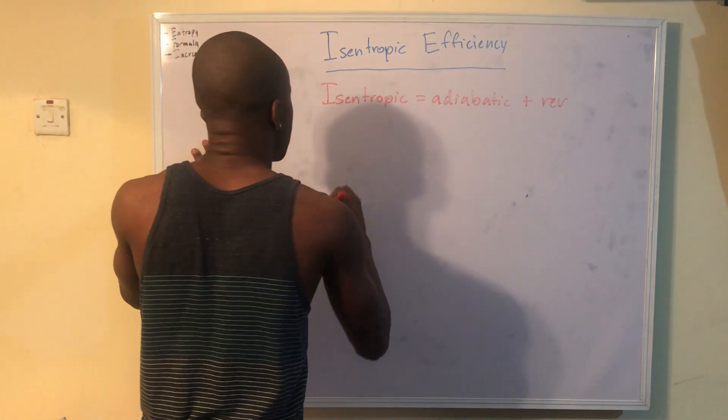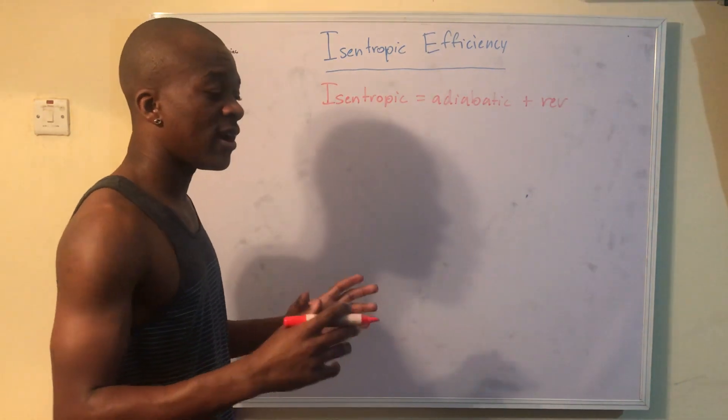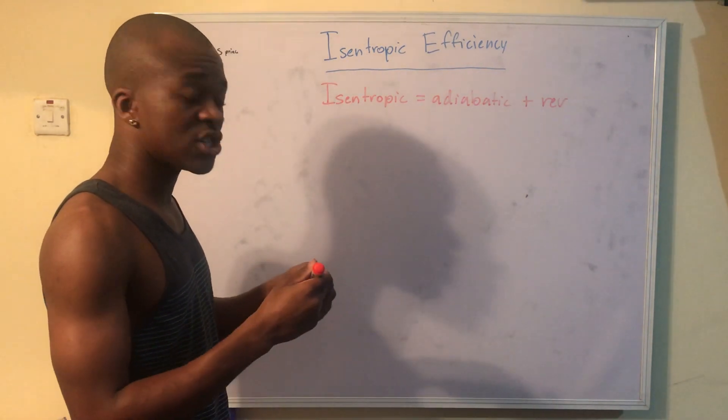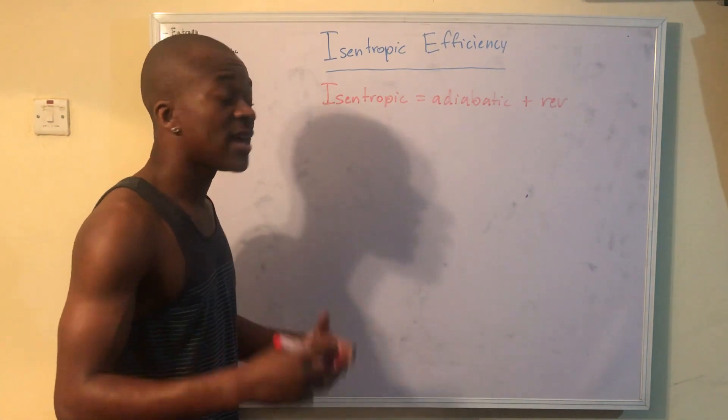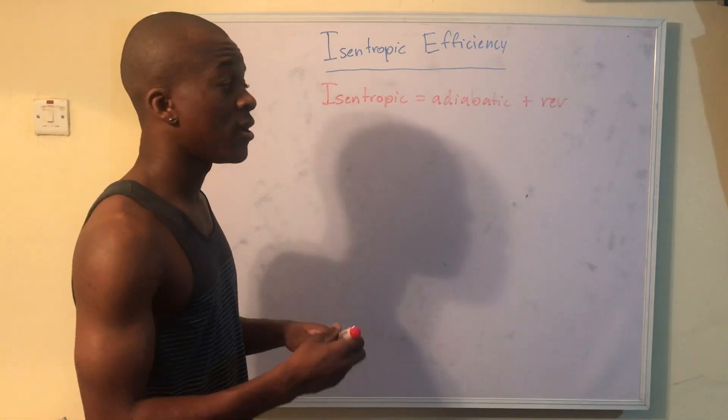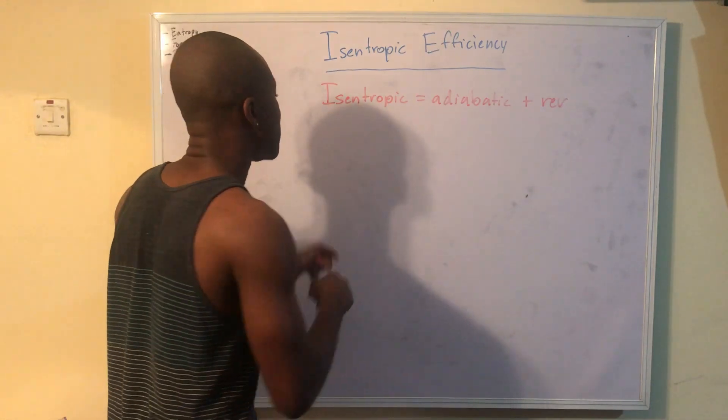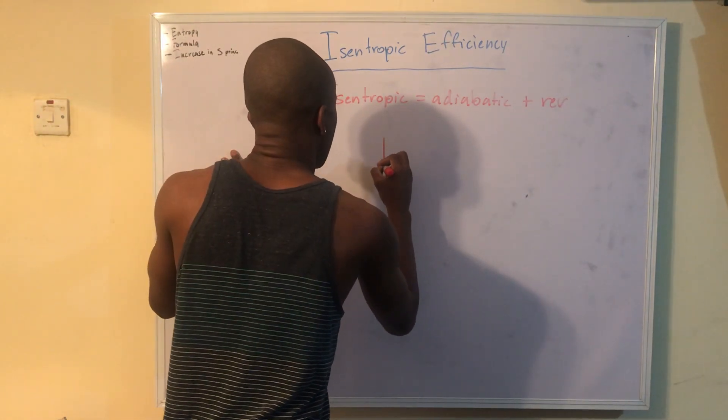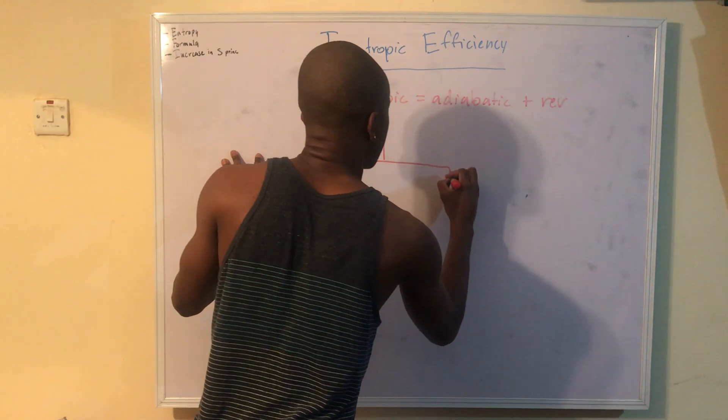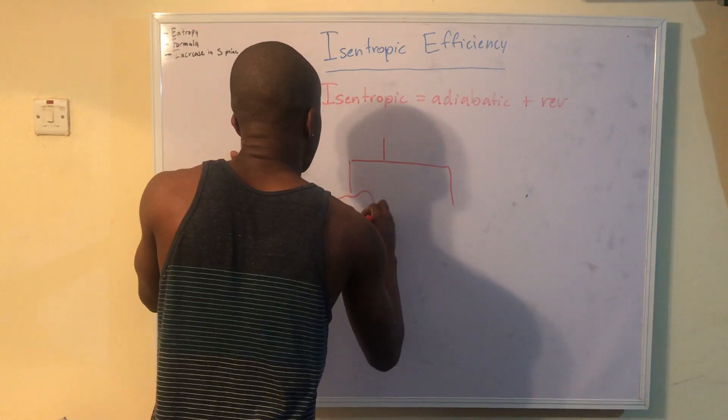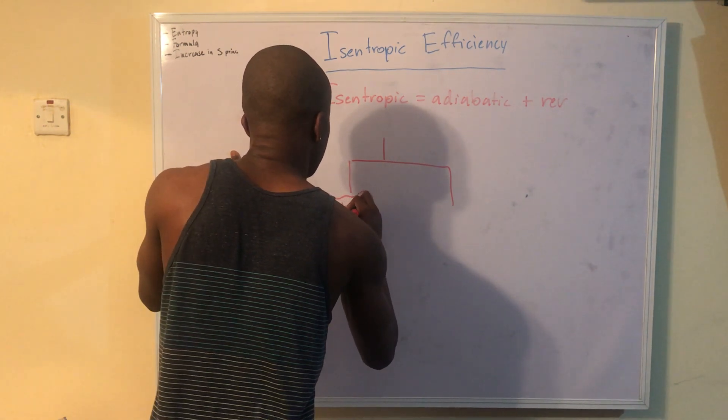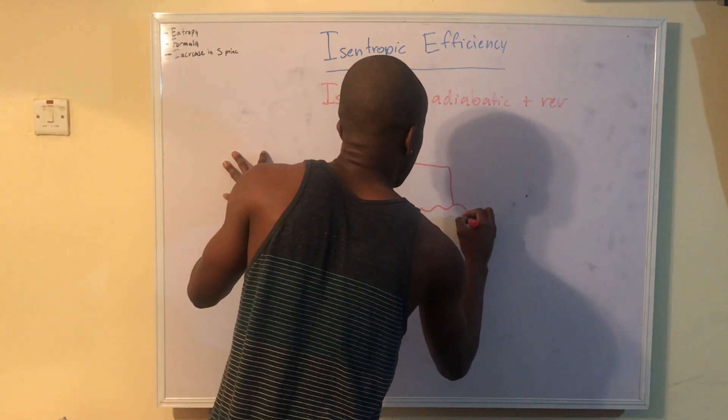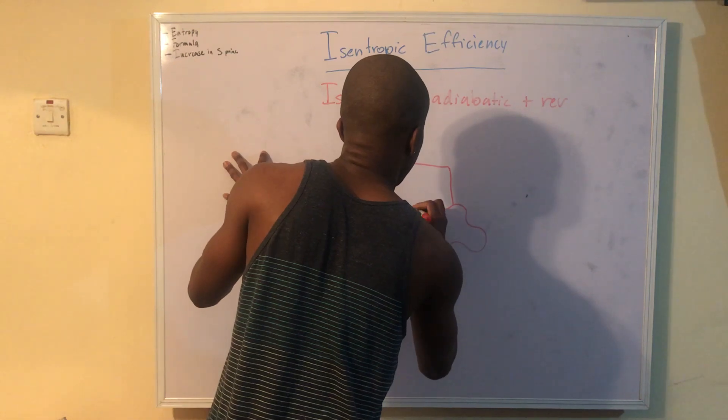Now, when we're dealing with actual, they might say, hey, you have an actual turbine that we're dealing with, and the isentropic efficiency is this. What you need to know is that we have this. So I'm going to draw - let's say this is our actual device. And this is our isentropic device.